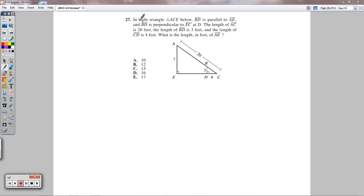Number 27 states, in right triangle ACE below, segment BD is parallel to segment AE. I'm going to draw on the picture as I read through this. So BD is this, parallel to AE right there.